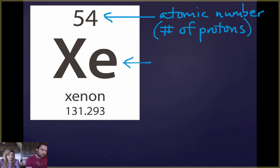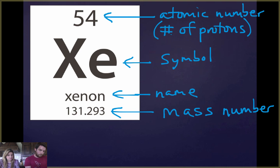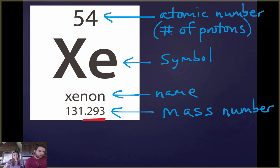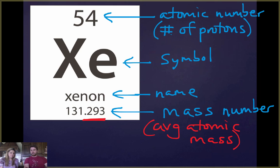The symbol for xenon is capital X, lowercase e — capitalization is a big deal, so pay attention to that. The bottom number is the mass number. Since all the mass is in the nucleus — from protons and neutrons — mass number minus atomic number gives you neutrons. You'll notice the number on the periodic table is a decimal; that's because it's actually the average atomic mass. A true mass number is always a whole number.